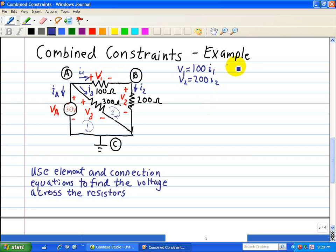V3 is 300 times I3, and then we have VA, which is just a voltage source, which is equal to 30 volts. So that's our element equations,